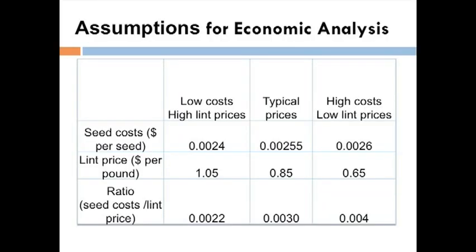We looked at the most profitable rate — not the highest yield — the most profitable over what our costs were. We looked at different price scenarios: low seed costs and high lint prices would be around a dollar fifty cotton paying only a hundred dollars a bag of seed. For typical prices, that was about $0.0026 per seed, which is really about $540 a bag — kind of what we're seeing now with tech fees and seed treatments. We looked at several different price scenarios in these situations.